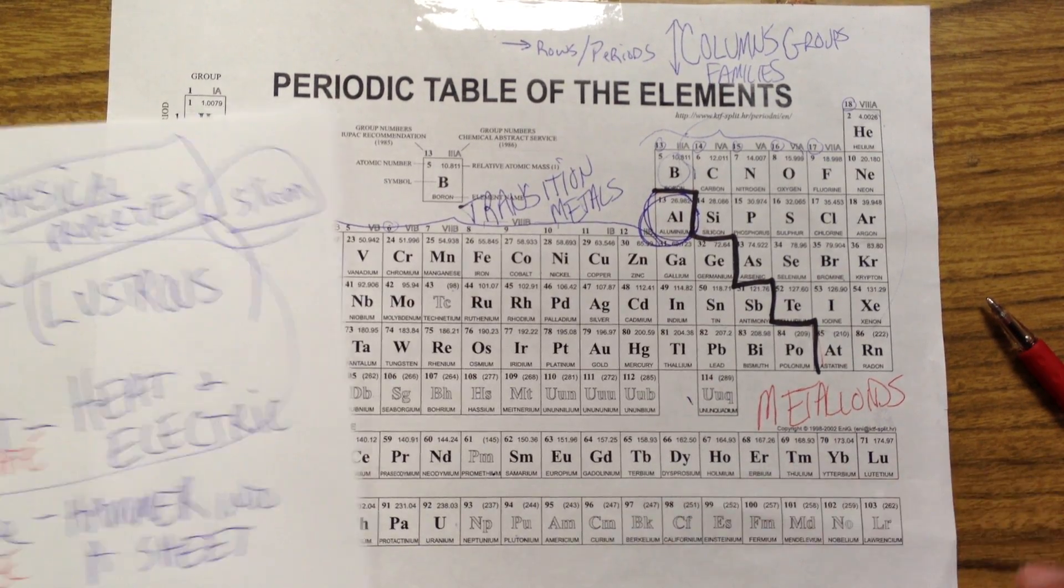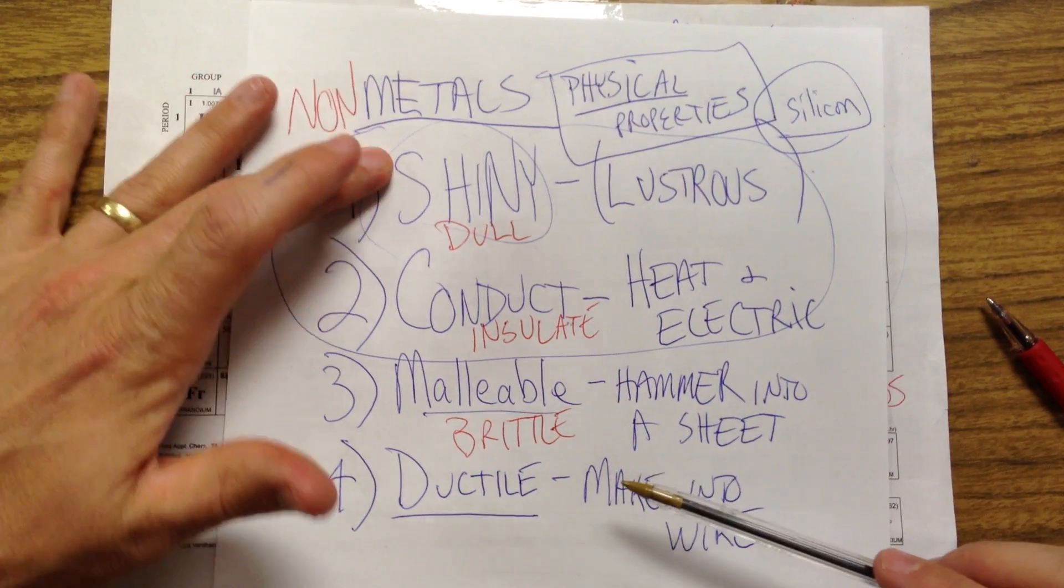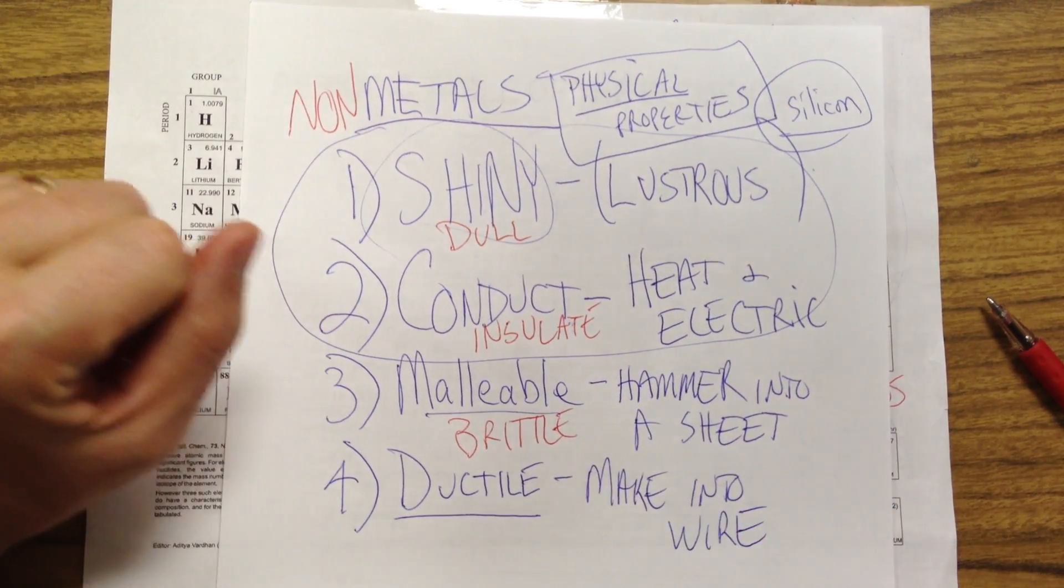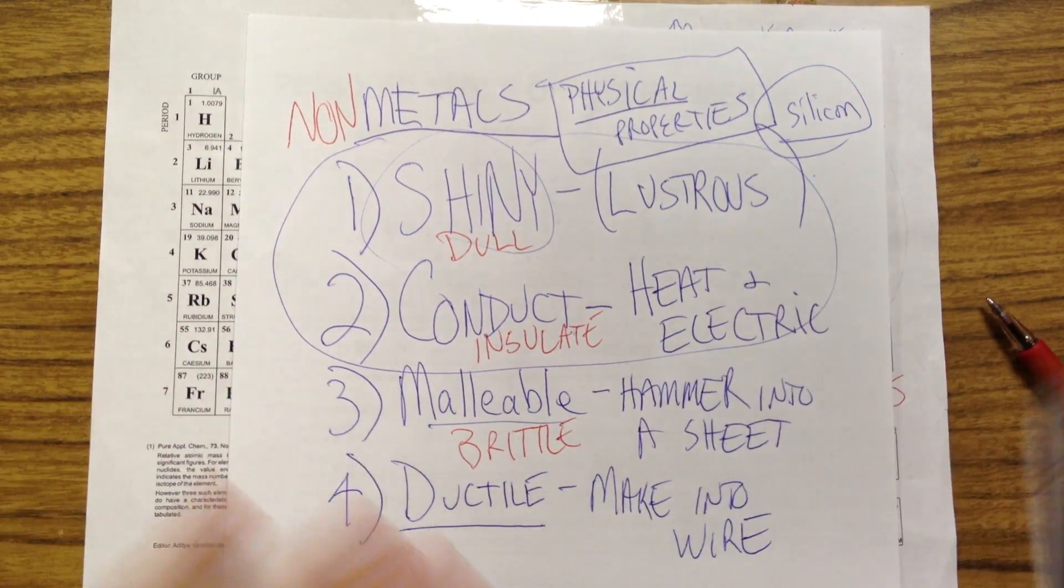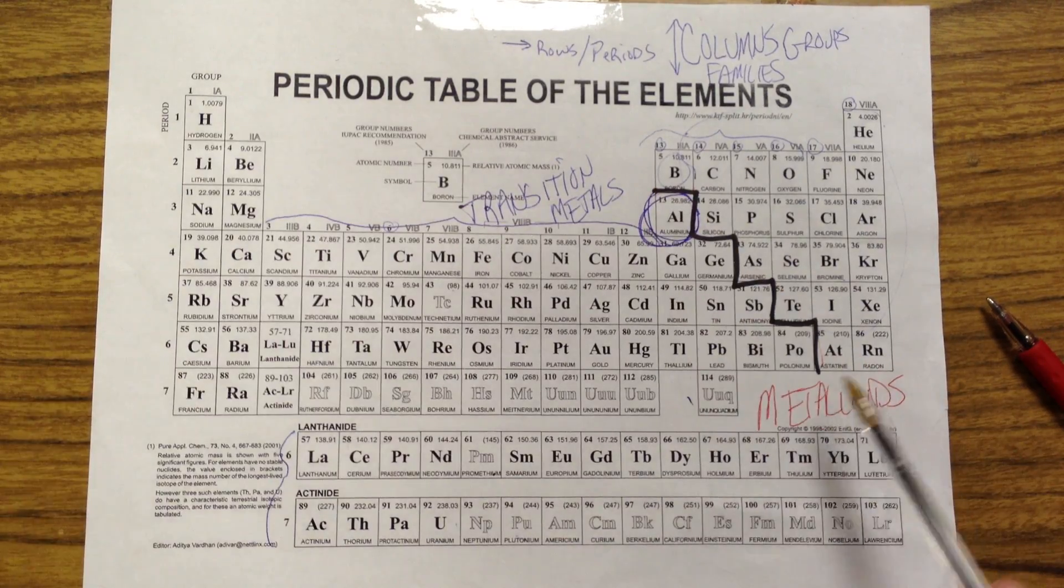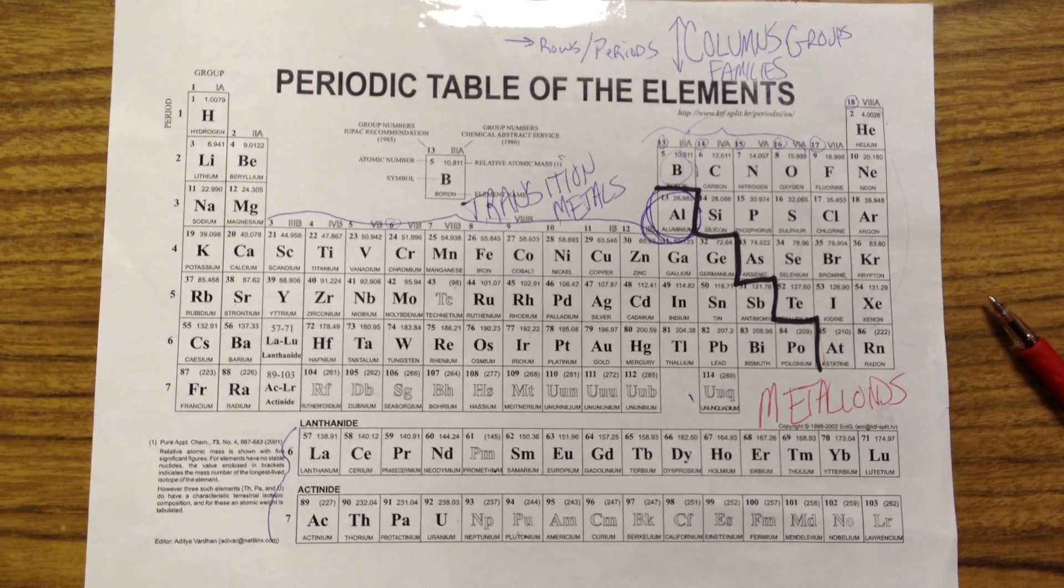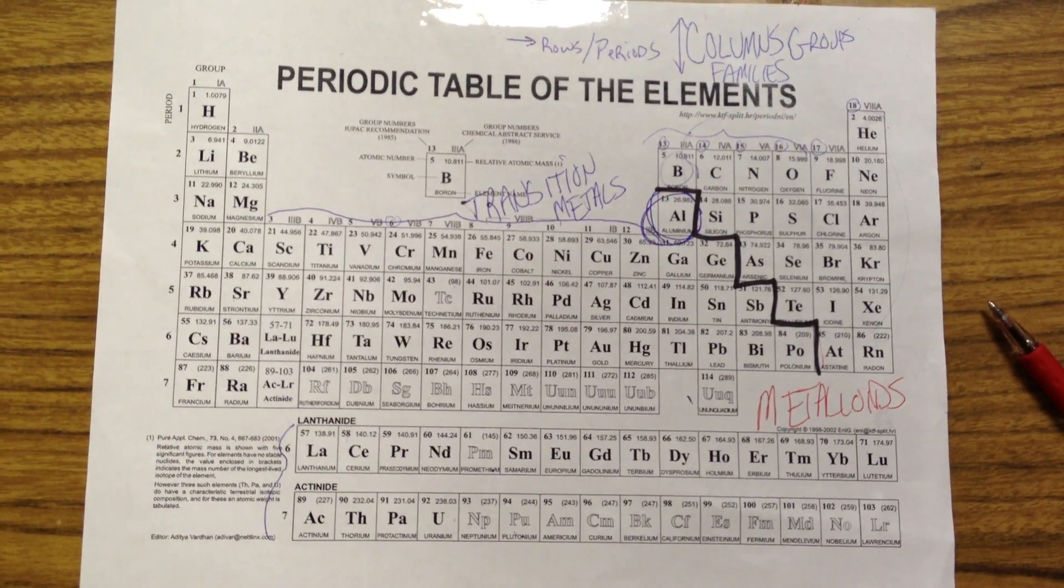And so if you were given something on a test and it said, oh, this is shiny and insulates and is brittle, then you would guess, well, that must be something that has both properties, so I'm going to guess the metalloid. And so that would be the difference between metals, non-metals, and metalloids.